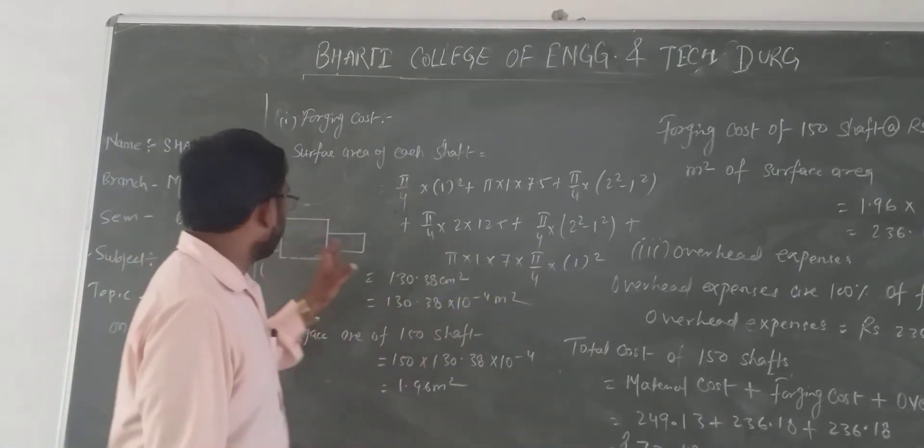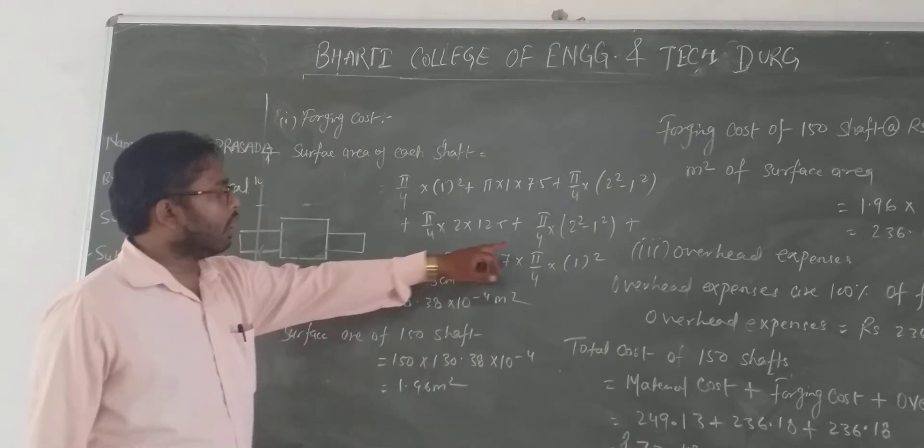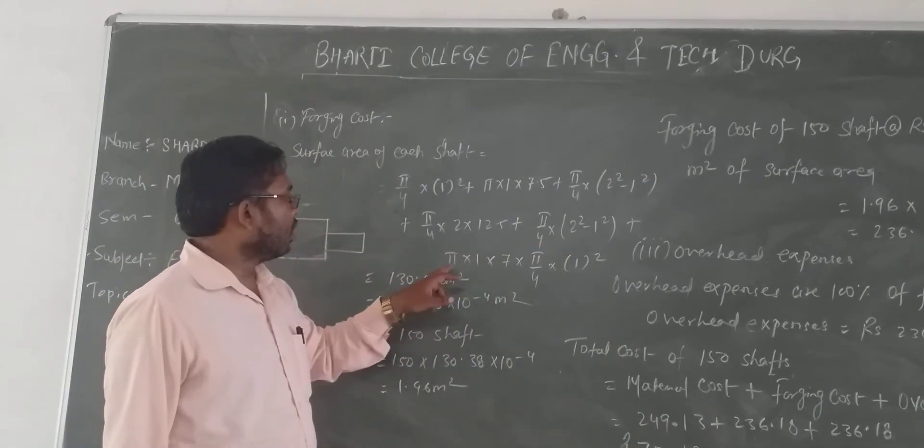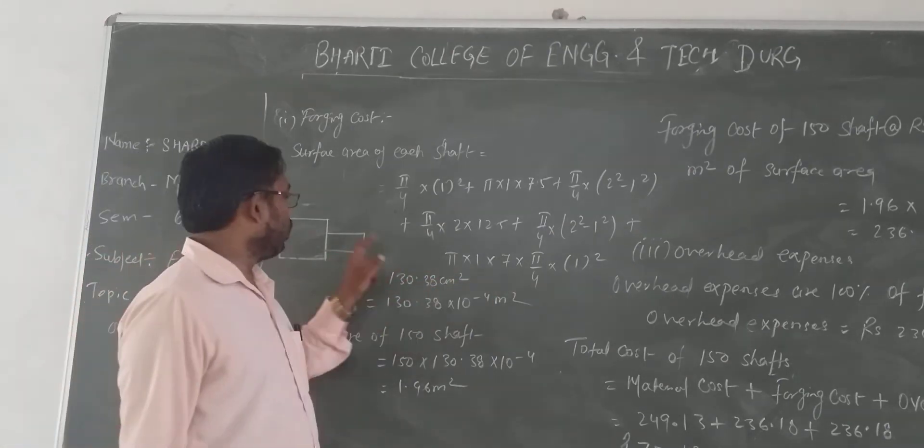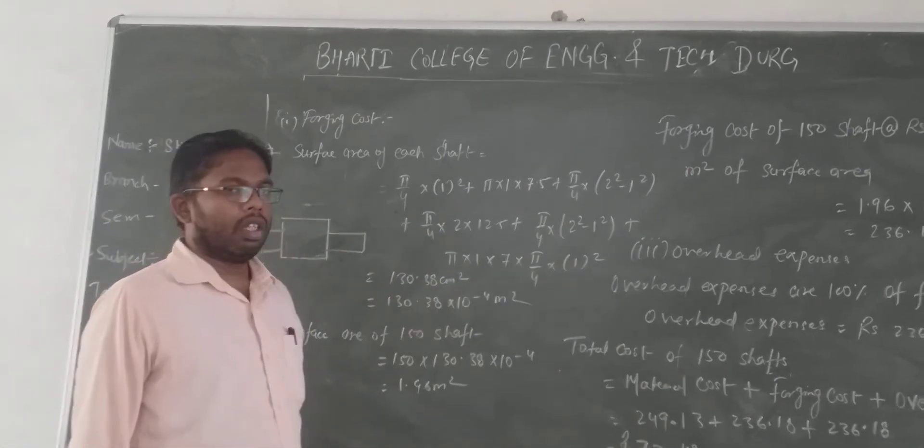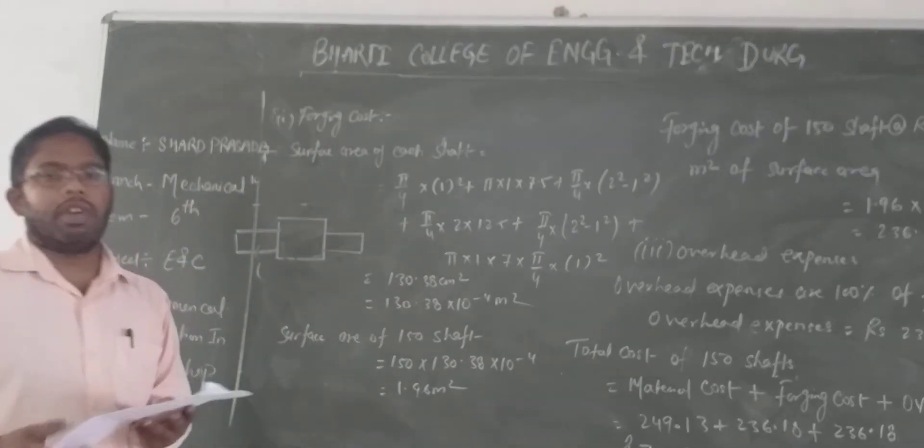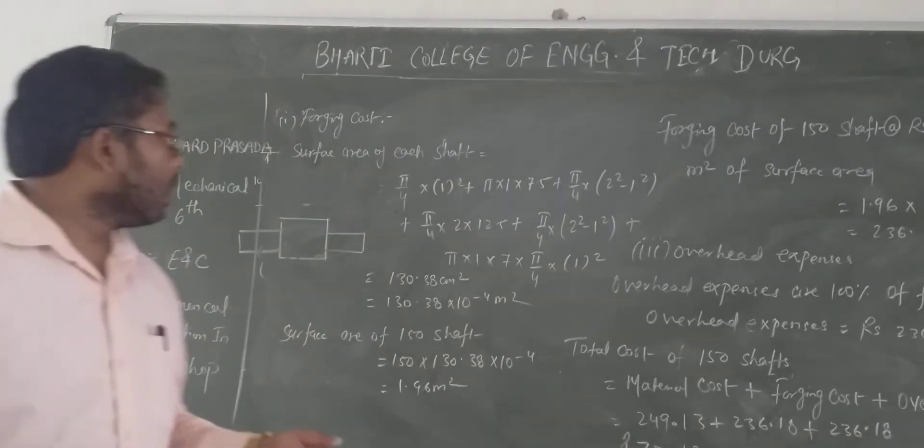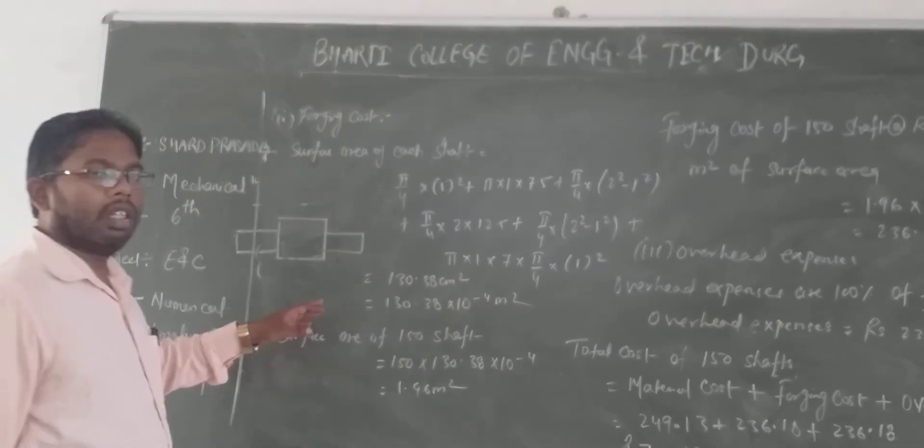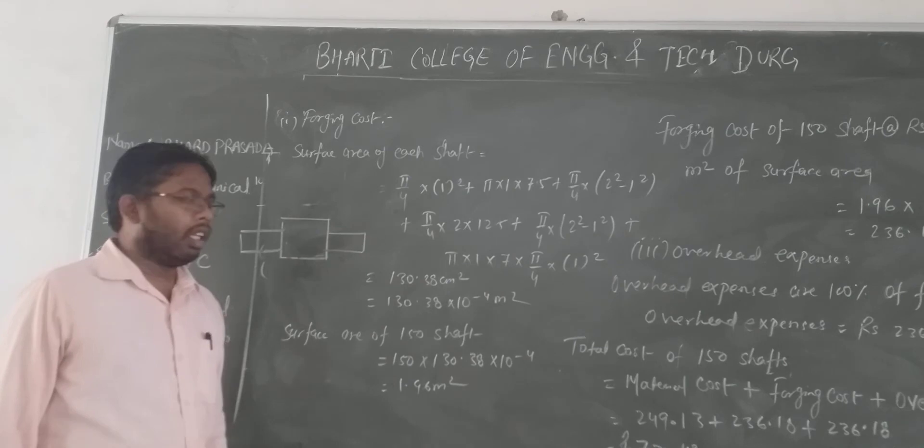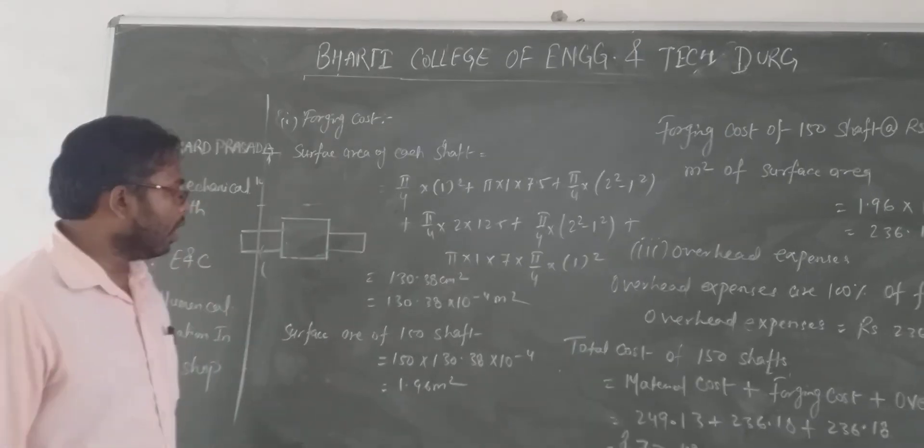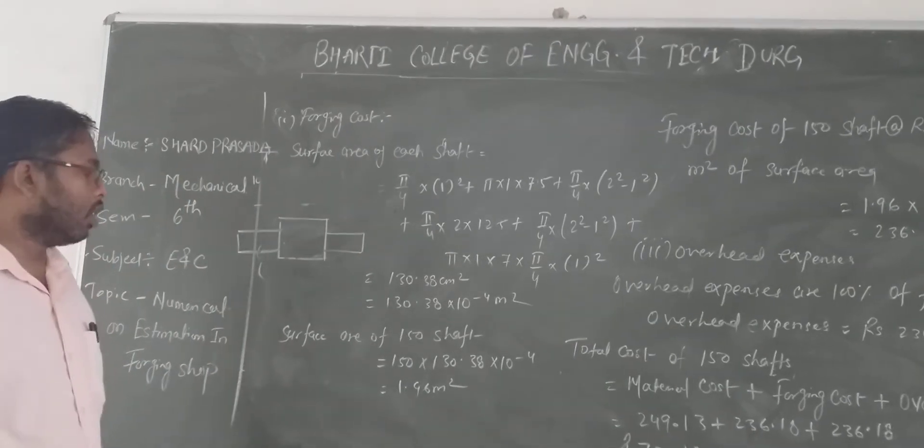Third is π/4 × 1² × 7. Solving this gives 138.38 cm². Converting to meters: 138 × 10⁻⁴ m².